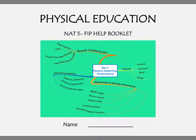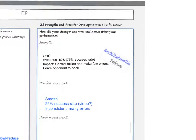Hi folks. In this video we're going to be looking at how to effectively answer the different parts of Outcome 2 in your National 5 PE NAB. Outcome 2.1 is asking you about strengths and areas for development, and that will be in relation to your performance in badminton.